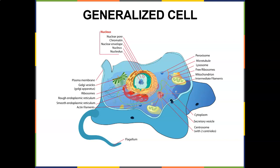Ribosomes make proteins, and proteins are needed to carry out everyday functions. The Golgi vesicle is an organelle I like to correlate to the UPS of the cell — what does UPS do? It ships packages and transports things. So the Golgi apparatus, or Golgi vesicles, helps ship, package, and transport molecules and proteins throughout the cell, both inside and out.